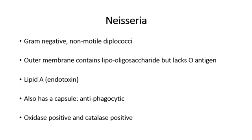In terms of their other characteristics, Neisseria are oxidase positive and catalase positive. A big part of their antiphagocytic mechanisms is that they have a capsule, and so they can ward off and survive longer within the human body.